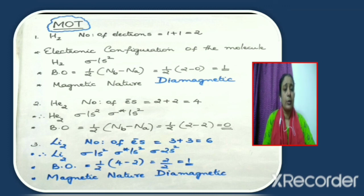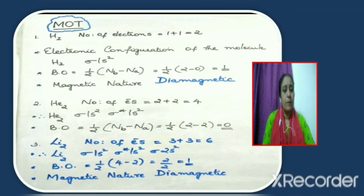We know that helium is monoatomic. Now consider lithium molecule Li2. The total number of electrons is equal to 6, so the electronic configuration is sigma 1s², sigma star 1s², sigma 2s². Bond order = half of (4 minus 2) = 1. The electrons are all paired in the molecular orbitals, so unpaired electrons are not present. Therefore, Li2 molecule will be diamagnetic.